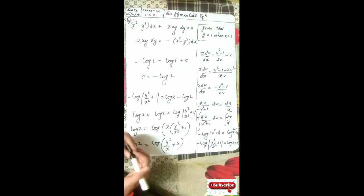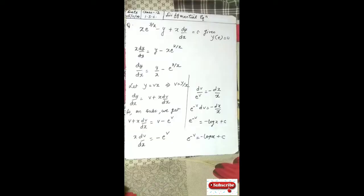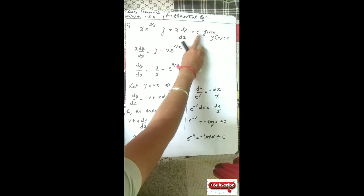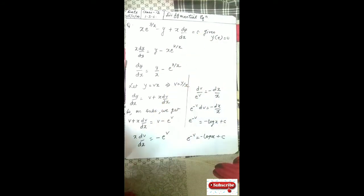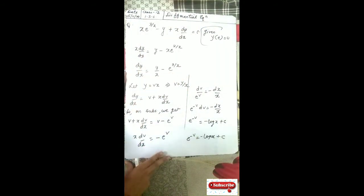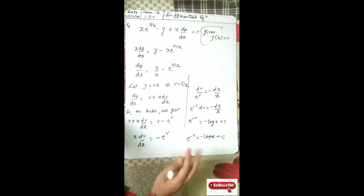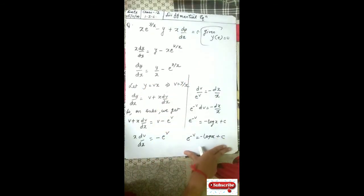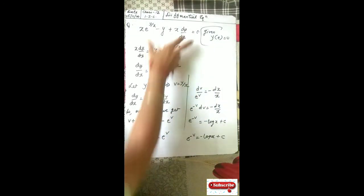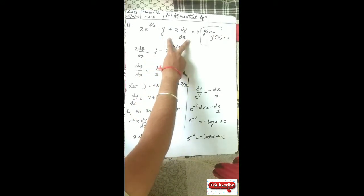That is the final solution of this question. Now here is the next question: x·e^(y/x) minus y plus x dy/dx equal to 0, given y at x equal to e is 0. We will find the general solution first, then with the particular value we will get the particular solution.